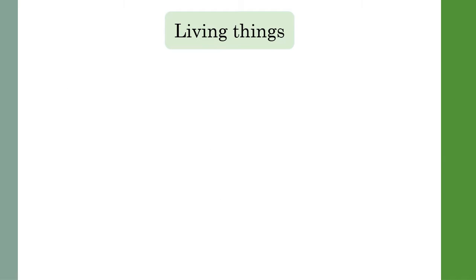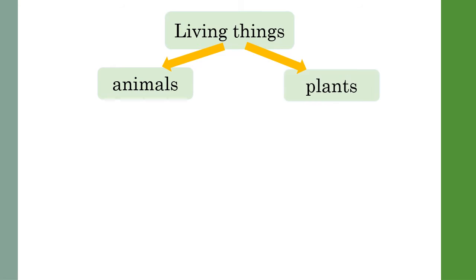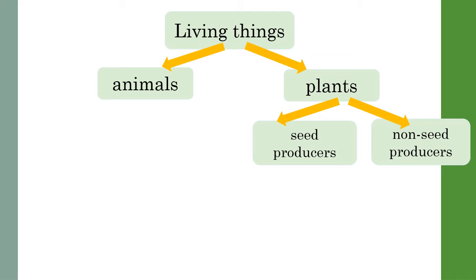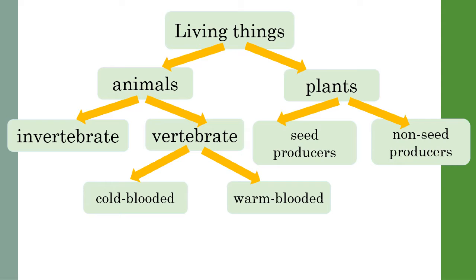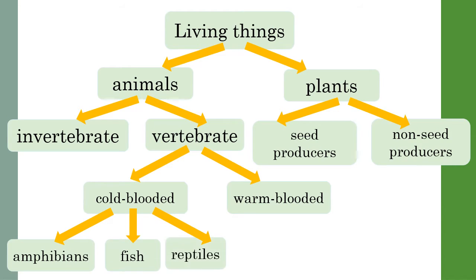Once we know something is alive we can begin to think about which group it might belong to based on its shared characteristics and features. Is it an animal or a plant? Some plants produce seeds and some do not. Animals could be grouped into invertebrate and vertebrate animals. Vertebrate animals can be cold-blooded or warm-blooded. Cold-blooded animals could be further grouped — are they amphibians, fish or reptiles? Warm-blooded animals could be a bird or a mammal.